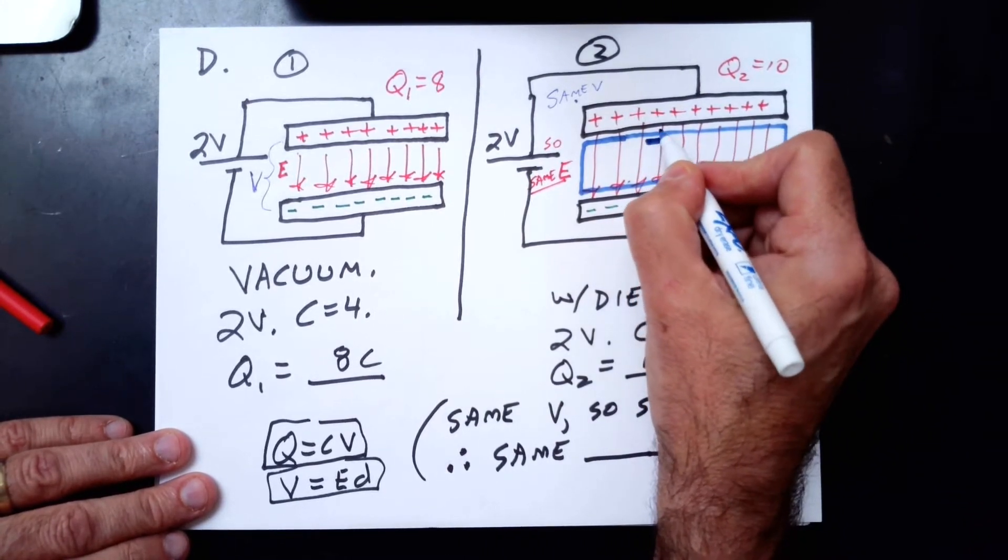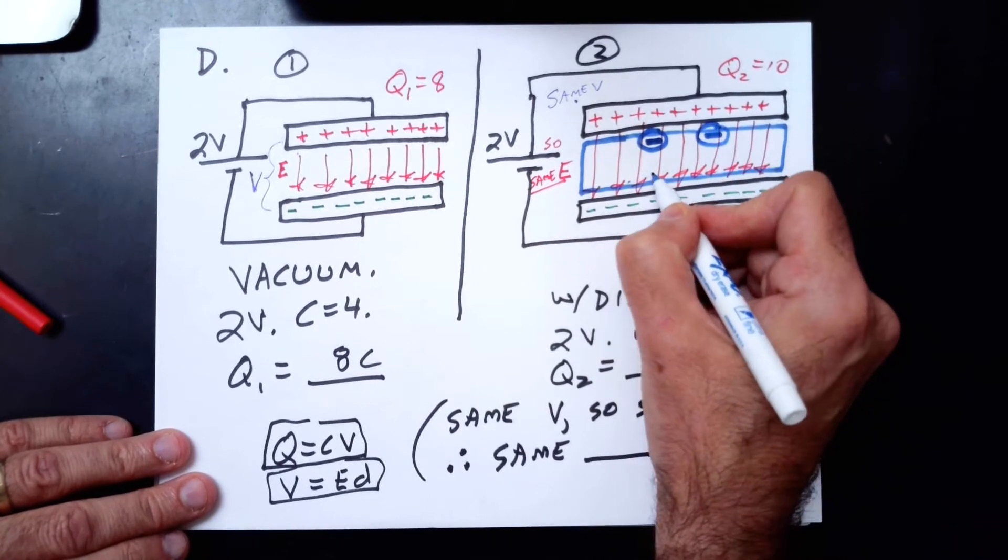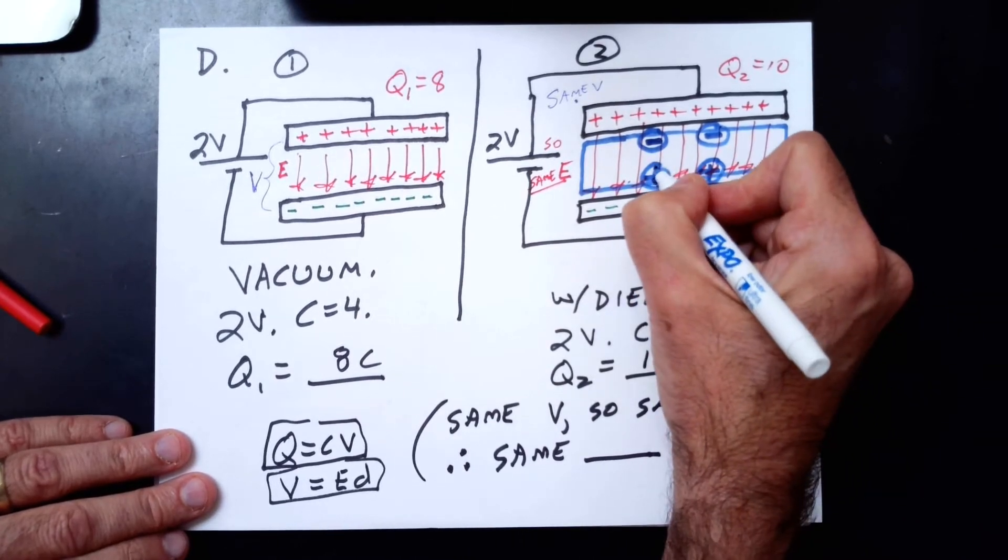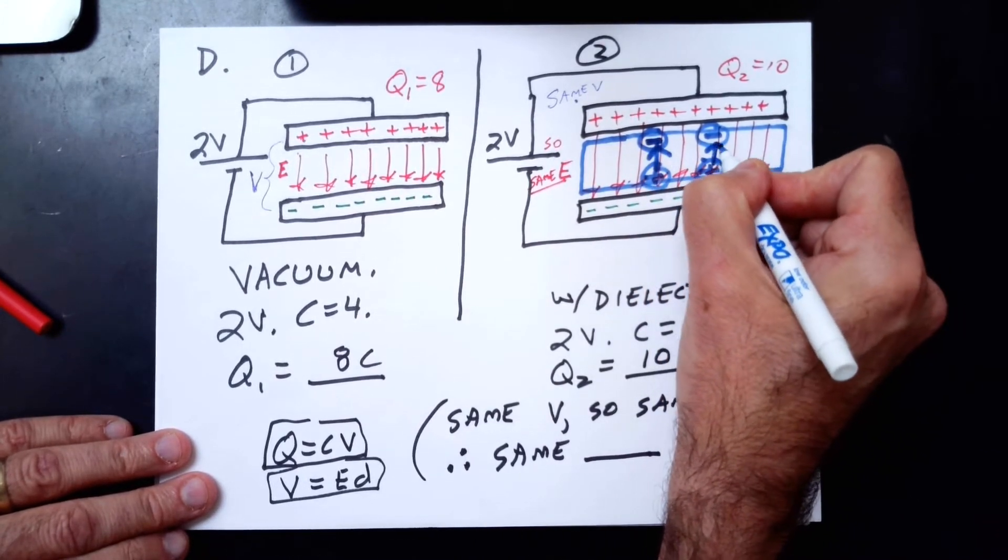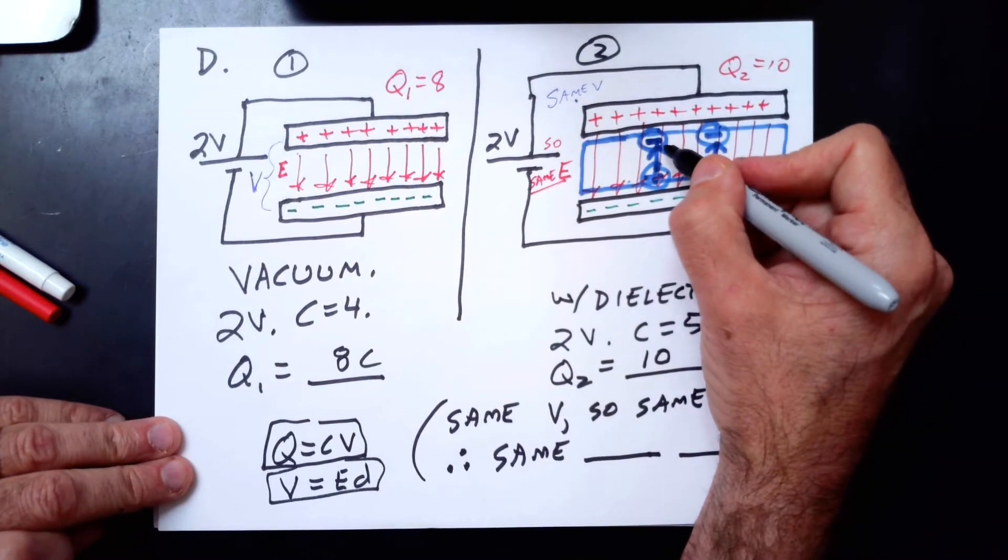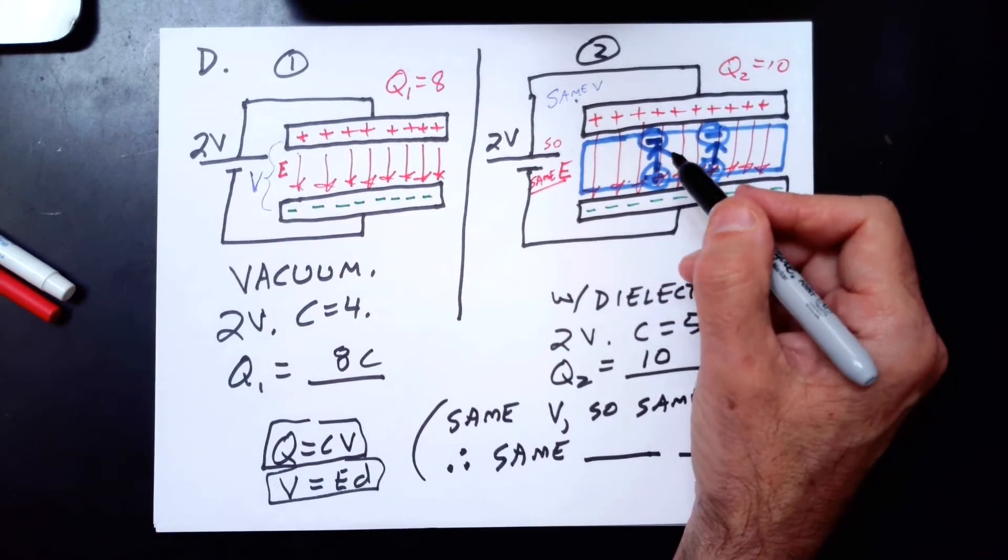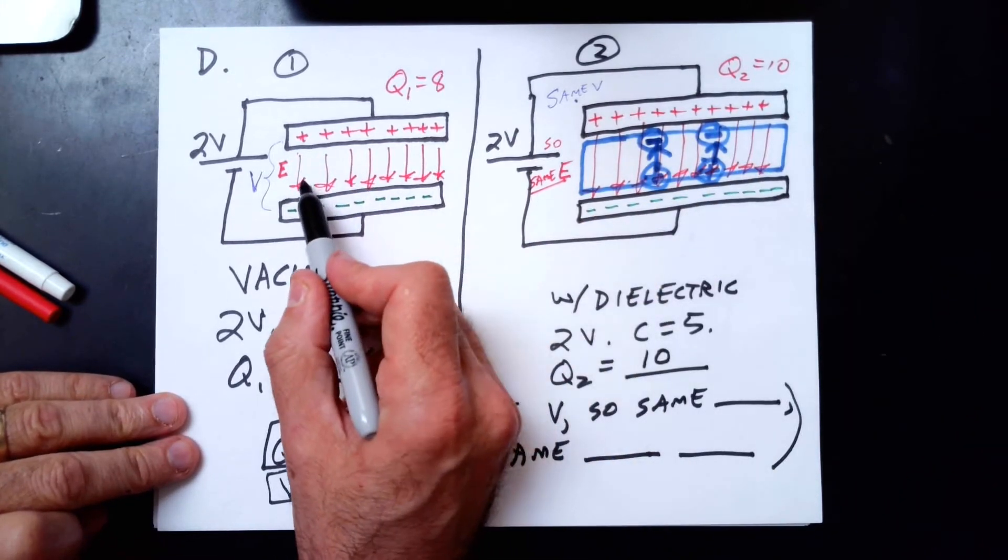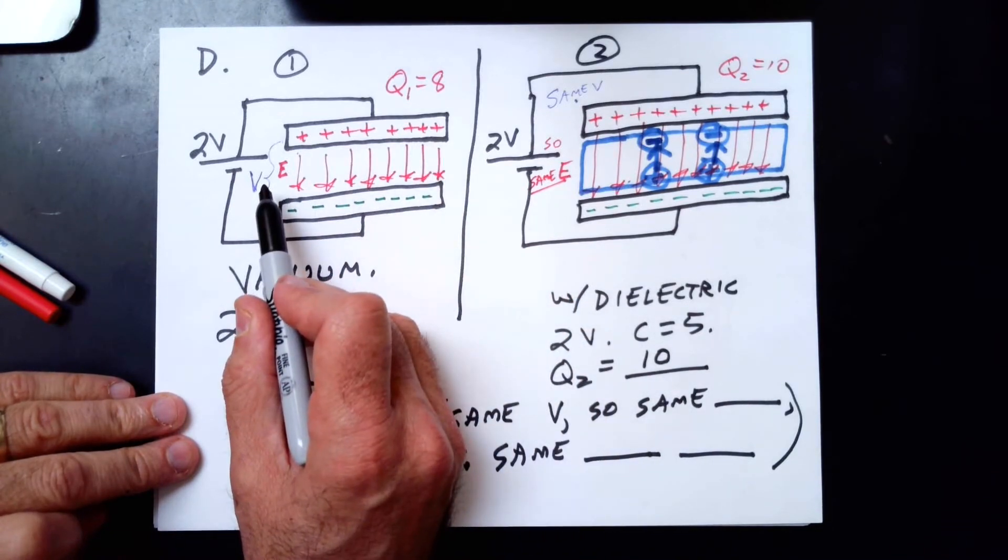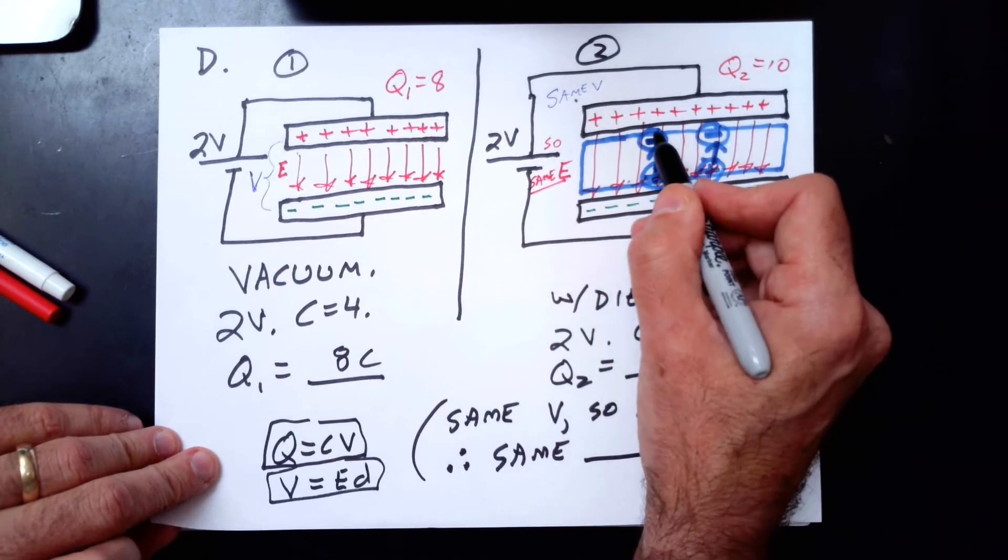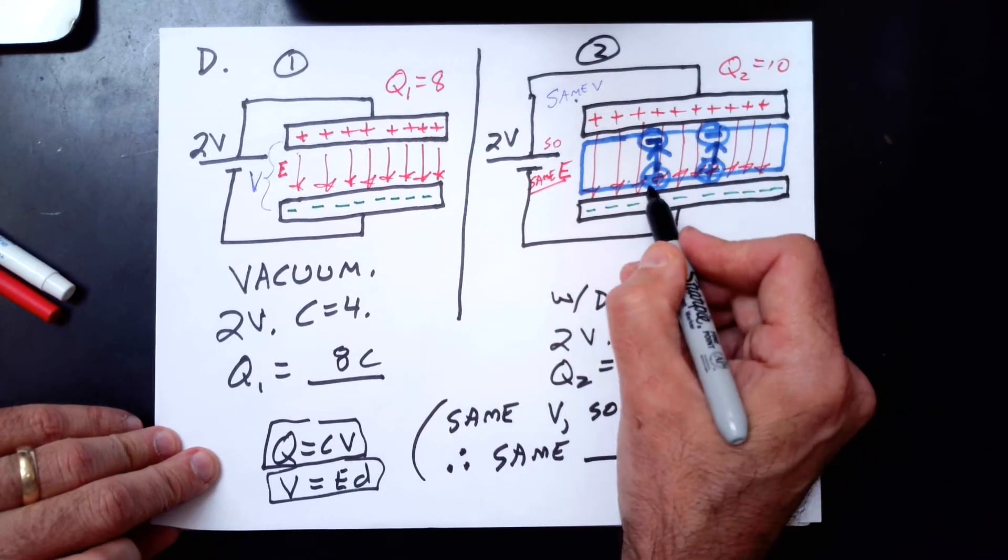And we can represent that with plus and minus signs, positive and negative signs. How many arrows do we need to cancel out so that we have the same E, so that we can have the same voltage of 2? Well, we had 8 arrows here, and now we have 10, so we have to cancel out 2 arrows. We can show that by saying that this electric field pulls negative charge towards the positive plate and positive charge towards the negative plate, creating a counter field inside the dielectric, pointing the opposite way. Why do I draw 2 negatives and 2 positives? Because I need to cancel out 2 of the 10 arrows, so I can get the net electric field back down to 8 arrows, so I can have the same voltage as before.